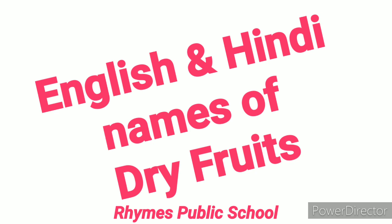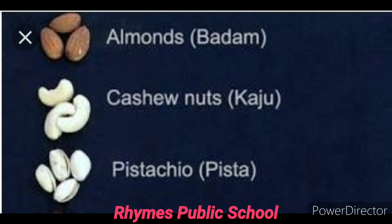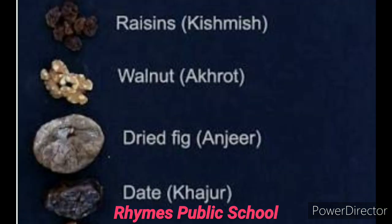First we will discuss the names of dry fruits. Dry fruits are very essential for nutrition. Do you know badam? Badam is called almond. Kaju is called cashew nuts. And pista is called pistachio. Kishmish is called raisins.